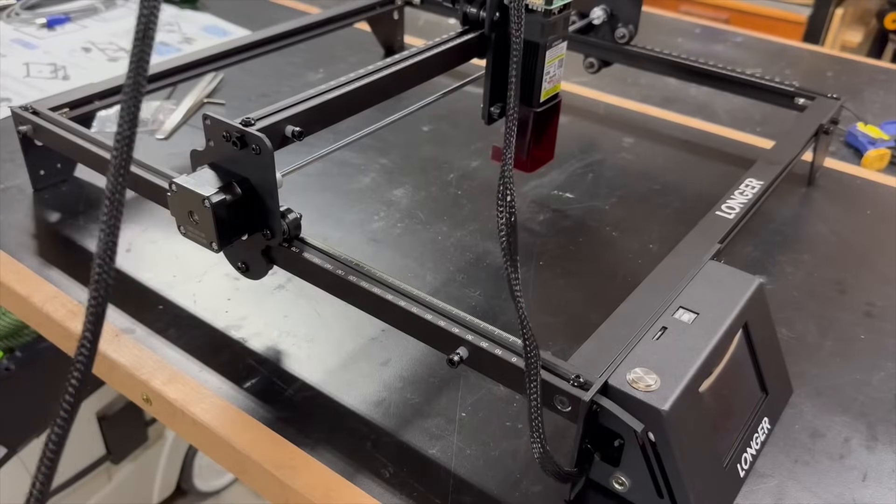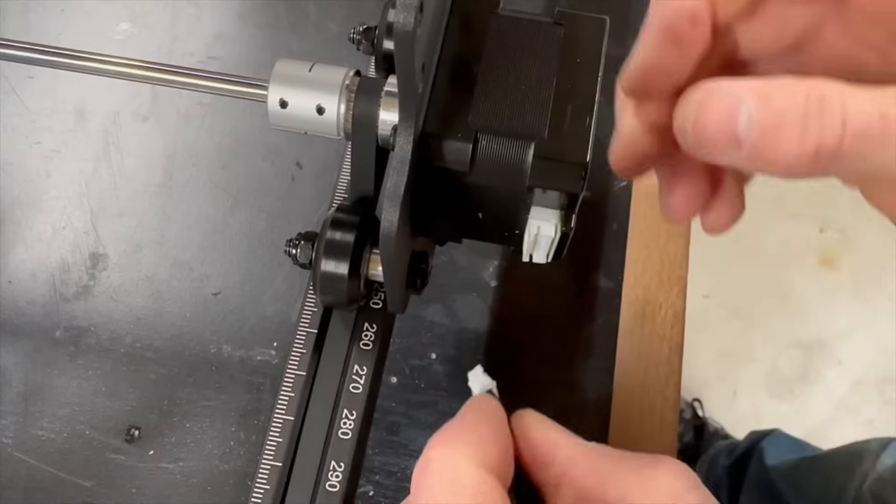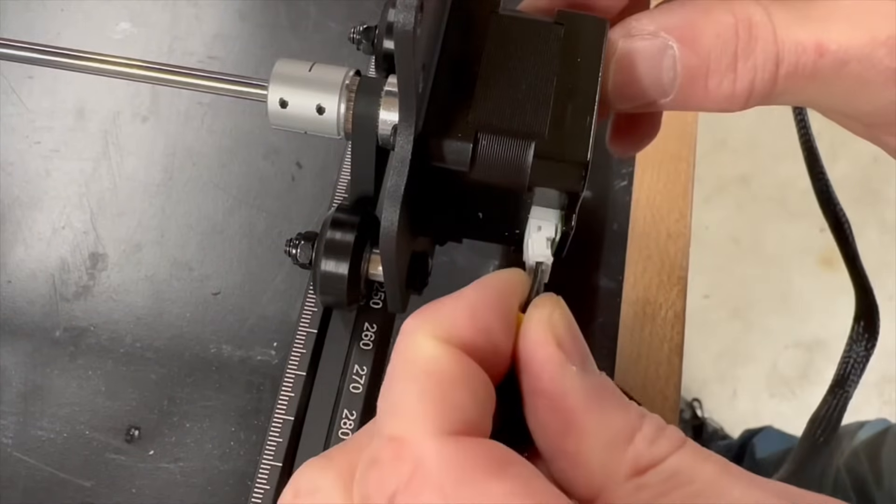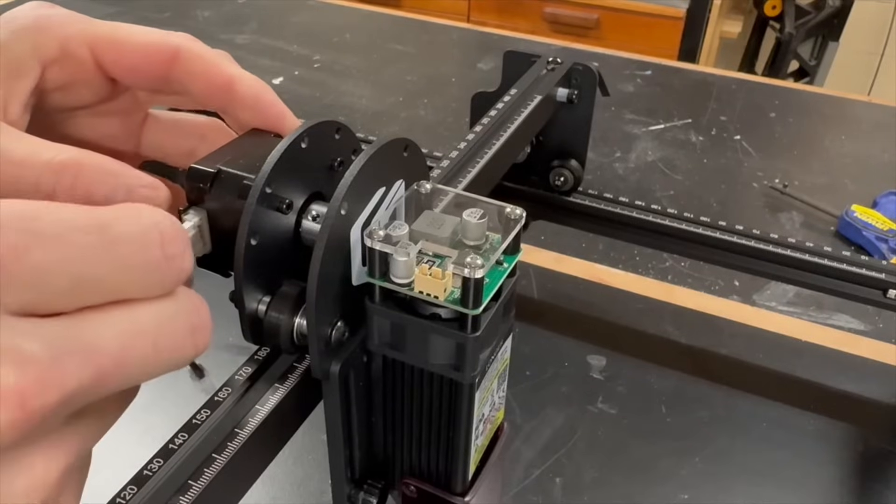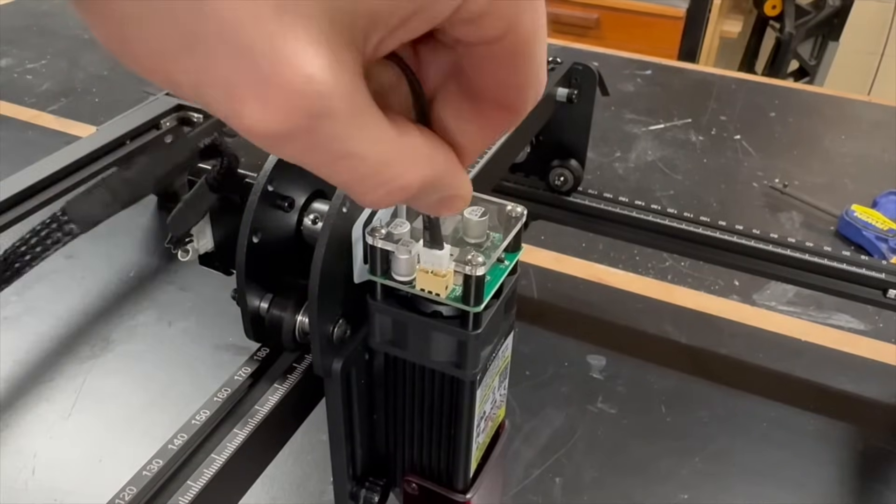For the last assembly step, the wiring harness is connected. Given the way the harness is designed, it would be pretty difficult to connect them incorrectly, but they are labeled. All together there are only three connections, one for each axis and the laser itself.